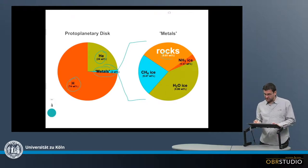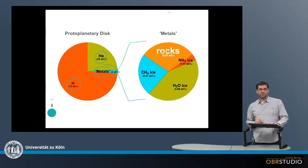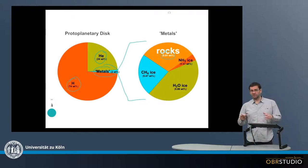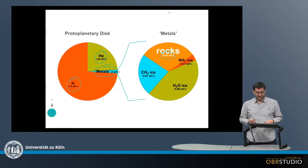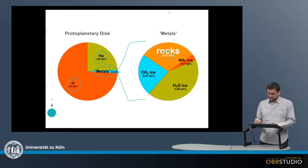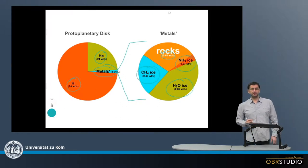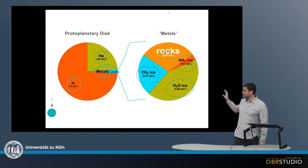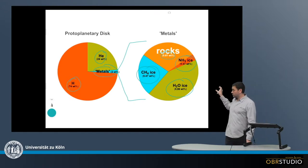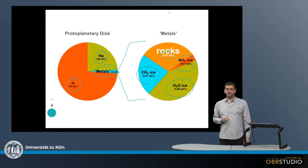Rocks make up only about 0.618%, or about half a percent, of the total composition. The rest consists of a couple of ices — CH4 ices, H2O ices, and NH3 ices — and these ices are what formed the gas giants.